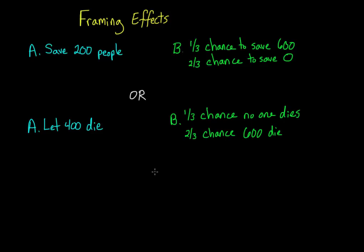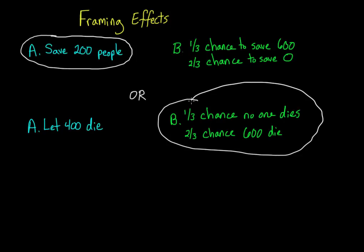If you're like most people, when the decision is framed in terms of how many people will be saved, you're more likely to pick option A, save 200 people for sure. But when the decision is framed in terms of how many people will die, you're more likely to pick option B to avoid killing 400 people for sure.